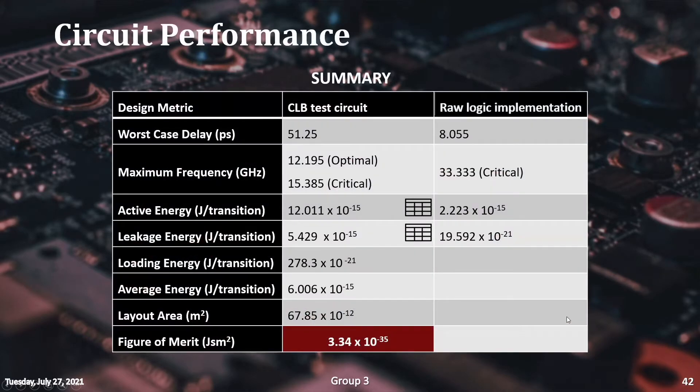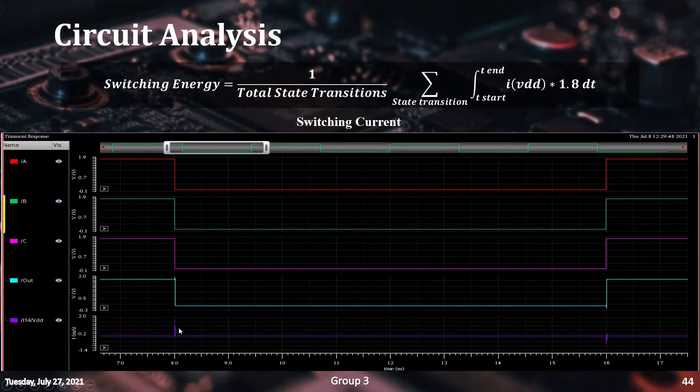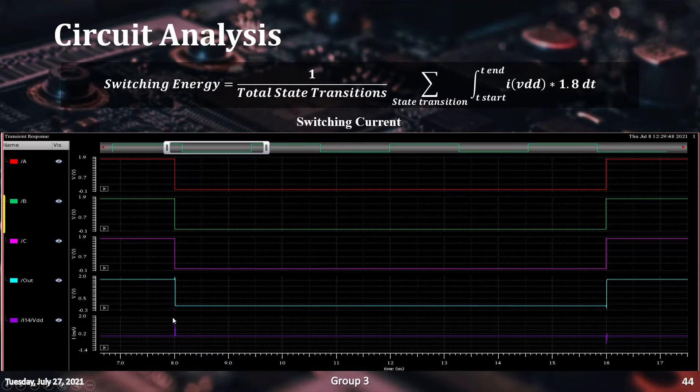After finding the maximum operating frequency, the energy requirements of the circuit were measured and compiled in this summary table. The active energy of the circuit is the average energy of all the state transitions in the circuit. These values are shown in this table here. From the graph, we can see that the current spike is occurring during a state transition and the corresponding energy loss is calculated by integrating this value with respect to time.